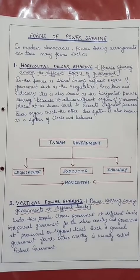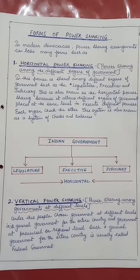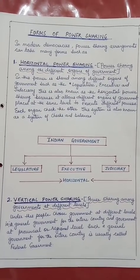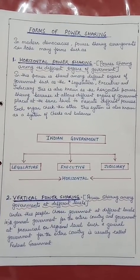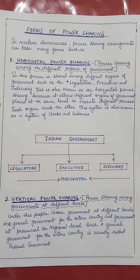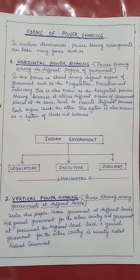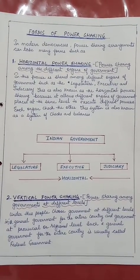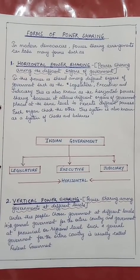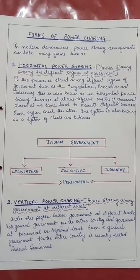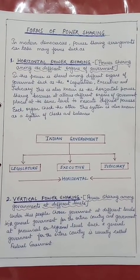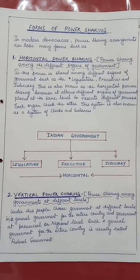Next we have vertical power sharing, i.e. power sharing among governments at different levels. Under this, people choose governments at different levels — a general government for the entire country and governments at provincial and regional levels. Such a general government for the entire country is usually called a federal government.